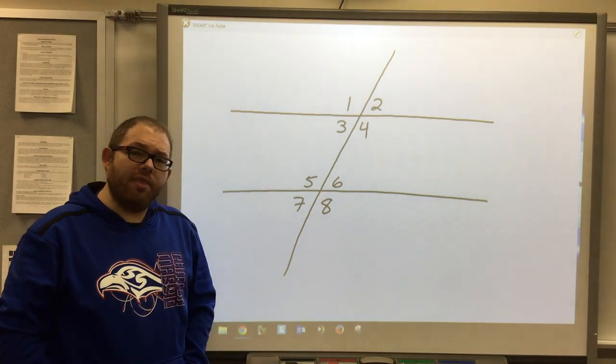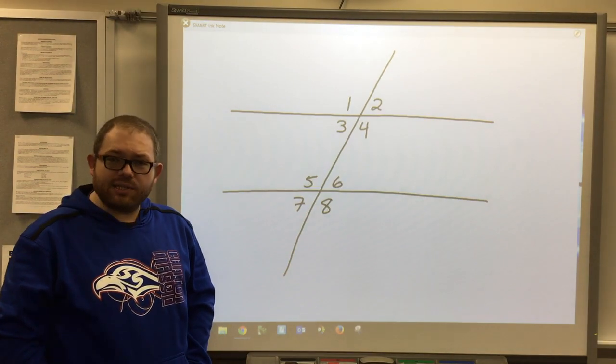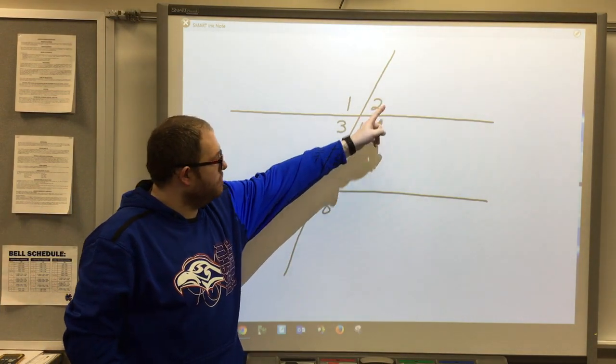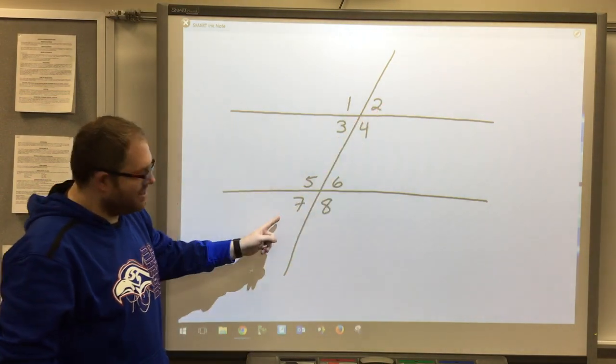There's only one other pair of alternate exterior angles, and that's two and seven.